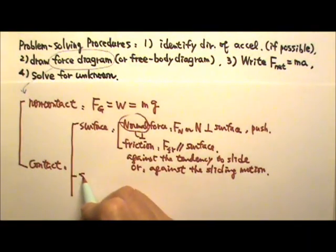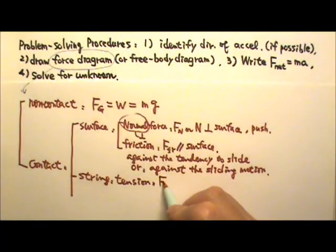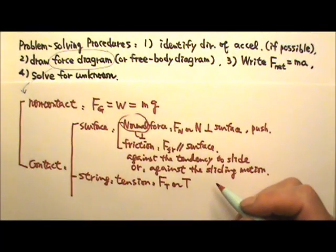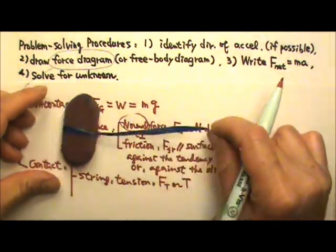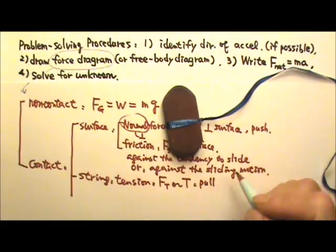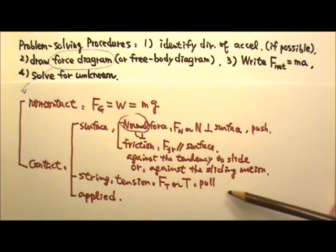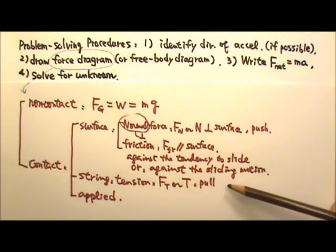Another kind of contact is a string. A string can give us tension — we write F-sub-T or capital T. A string can only pull; a string cannot push, so tension is a pulling force. Then we have applied force. If I want to apply a force on an object, I have to have contact with the object, and it's basically either a push or a pull. So these cover most of the forces we will see in mechanics, which is probably the first two-fifths of the course.